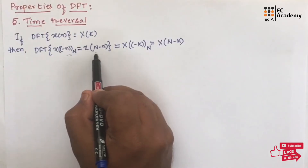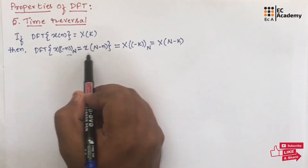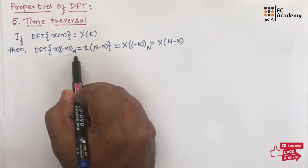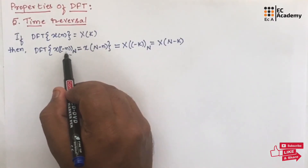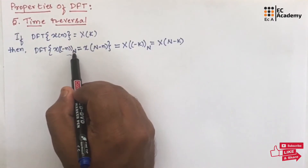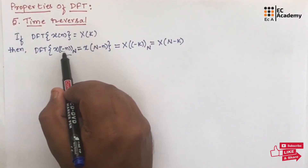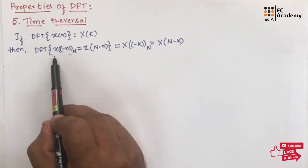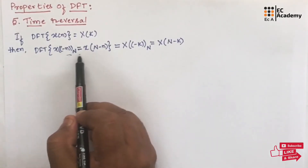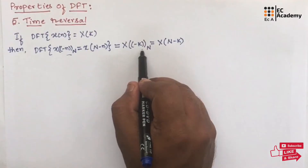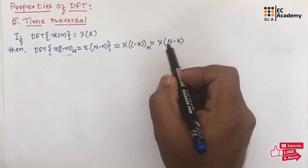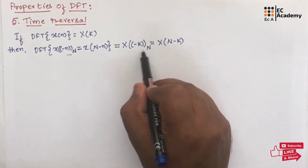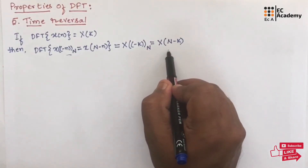The time reversal operation of x of n can be represented as x of N minus n. This we understood in our previous topic, where we can add the mod value with this n value. So if you add the mod value, it will be N minus n. So if we take the DFT of the time reversal signal, then we should get X of minus k mod N, that is the same as X of N minus k.